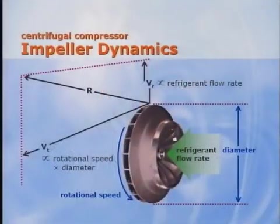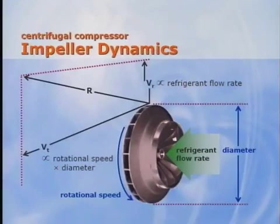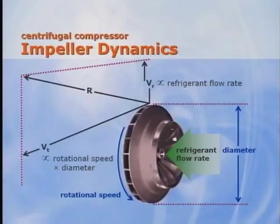Looking at the velocity-pressure relationship that acts on the refrigerant vapor, these forces can be broken down into two primary components. One is the radial vector V sub R, which is proportional to the refrigerant flow rate through the compressor. The other is the tangential vector V sub T, which is proportional to the rotational speed and the diameter of the impeller. Therefore, the ability of a compressor to produce static pressure can be changed by the refrigerant flow rate, rotational speed, and diameter of the impeller.